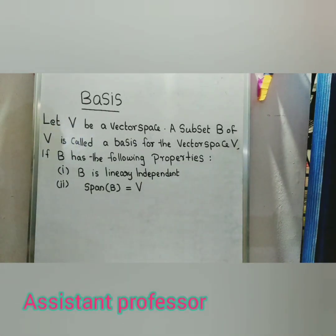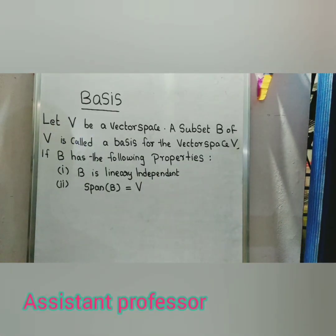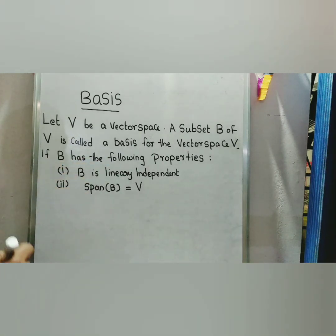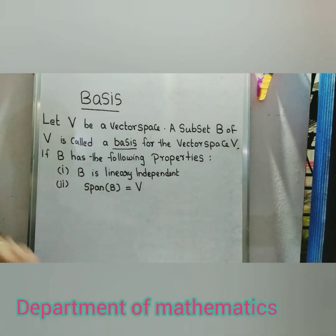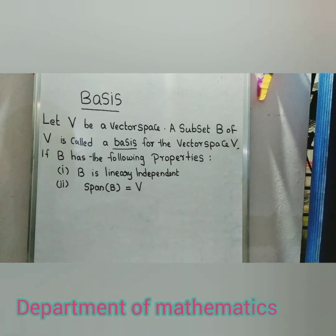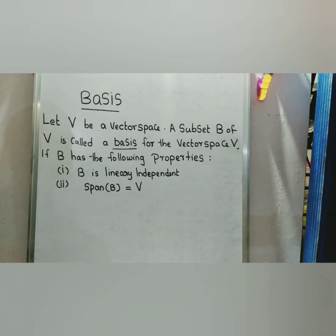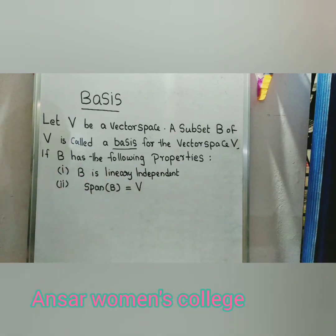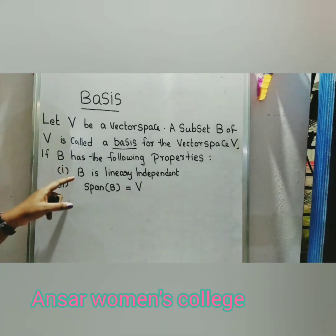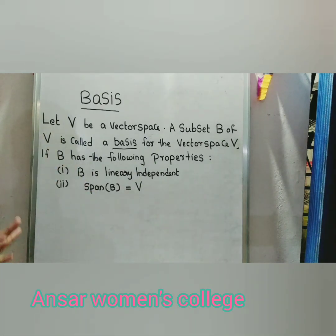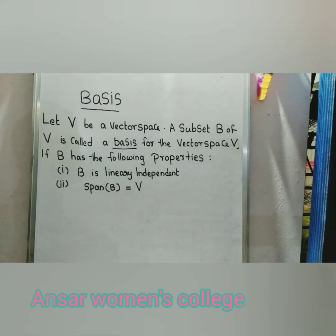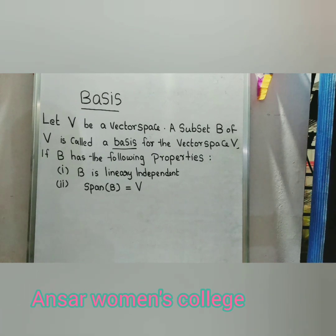Basis for a vector space. Let V be the vector space. A subset B of V is called a basis for a vector space V if B has the following properties: first, B is linearly independent; second, span of B is equal to V. If B satisfies these two properties then B is called the basis for the vector space V.